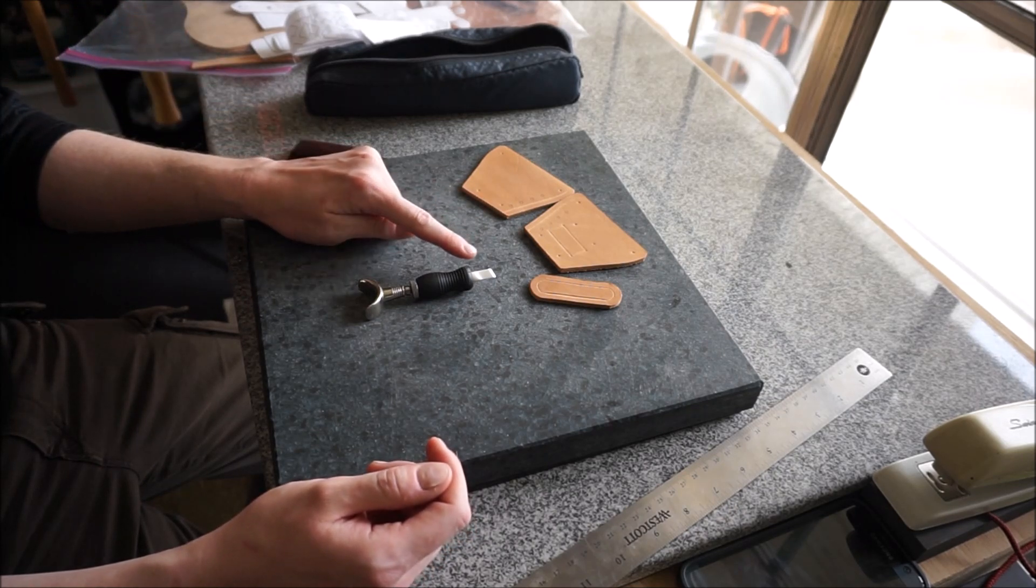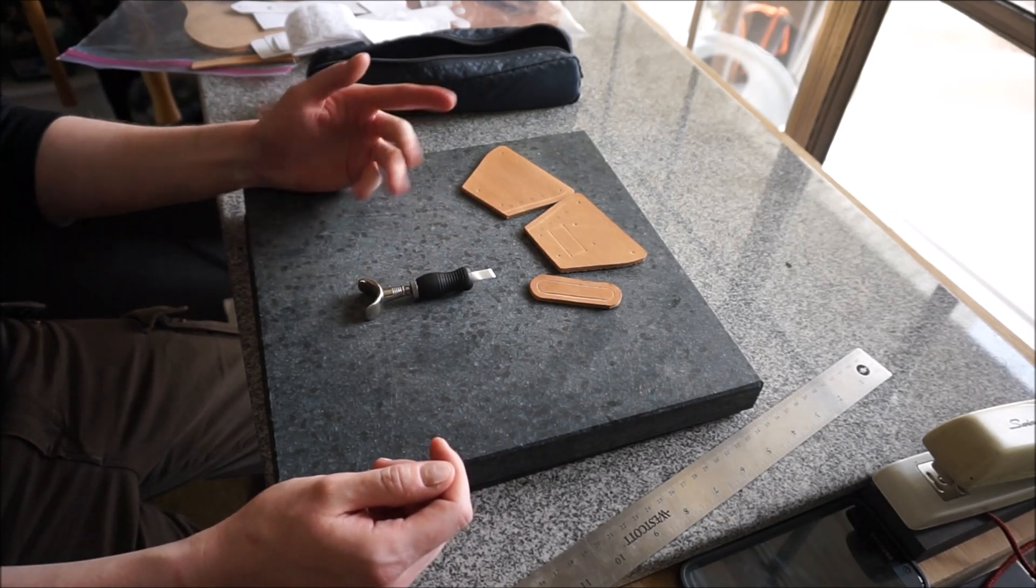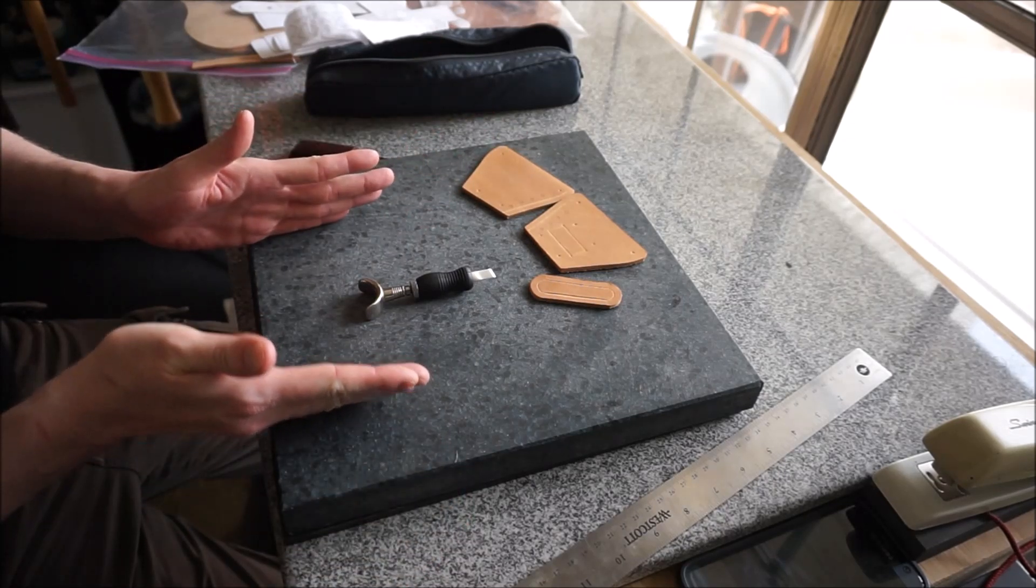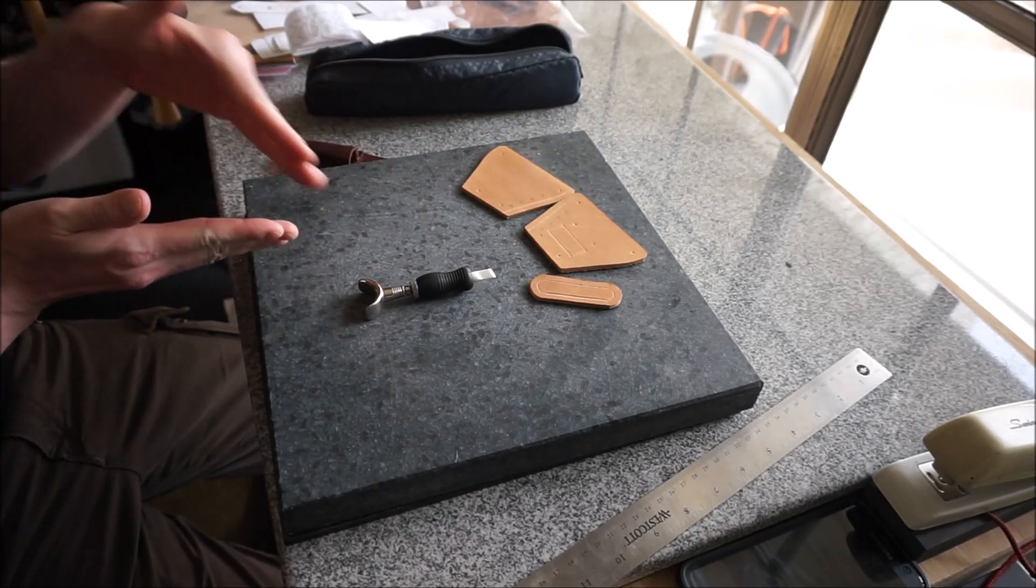And it also has a ceramic filigree blade. Ceramic is the white, obviously, and filigree blade means it's narrower and also that it's angled very steeply.